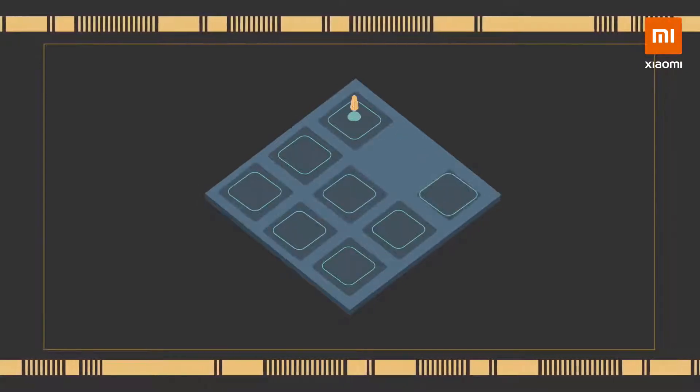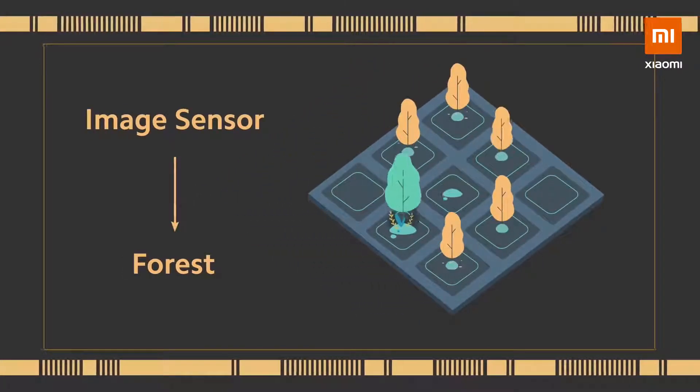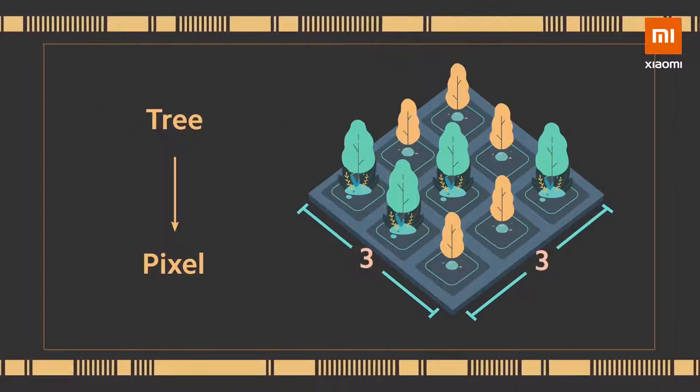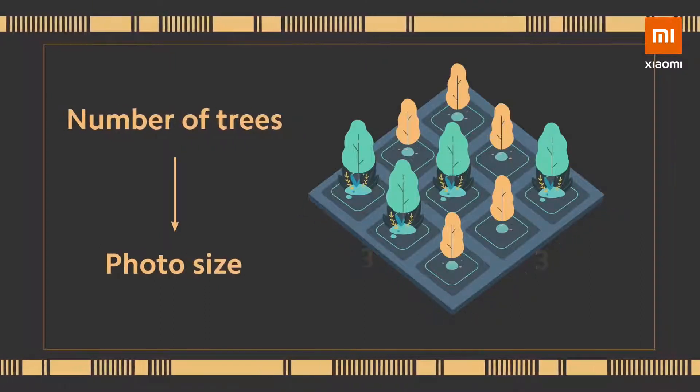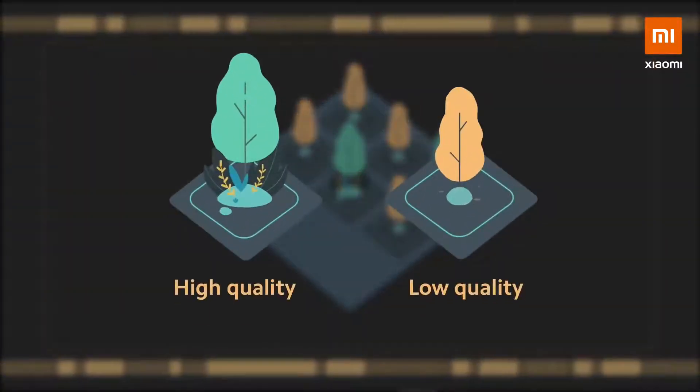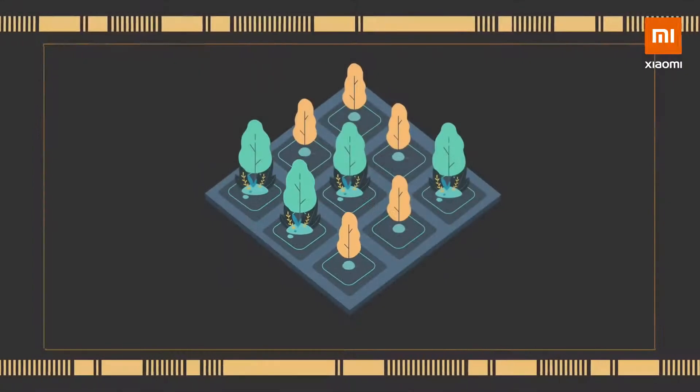Let's break it down by comparing a sensor to a forest. In this forest, each tree represents a pixel. The total number of trees represent the size of the photo. The quality of the wood from the trees represents the quality of the photo.